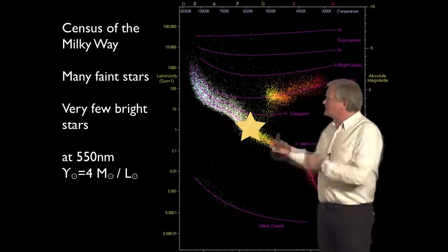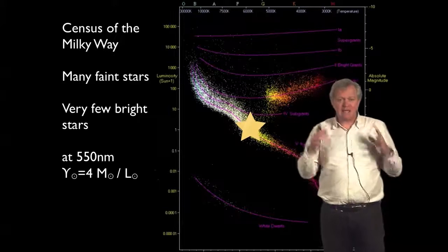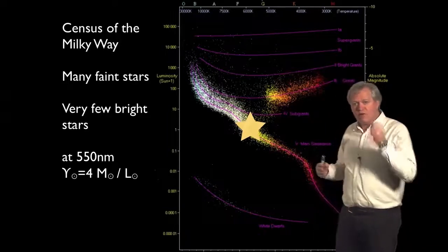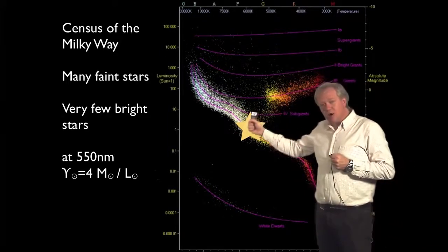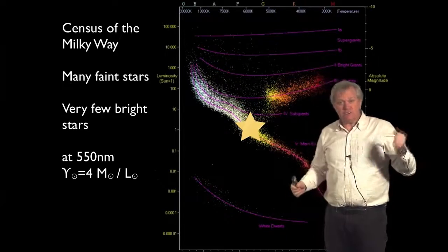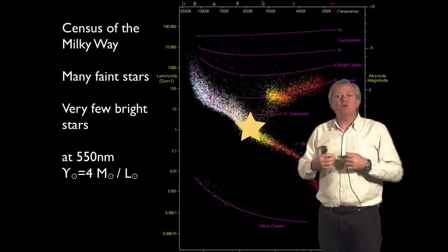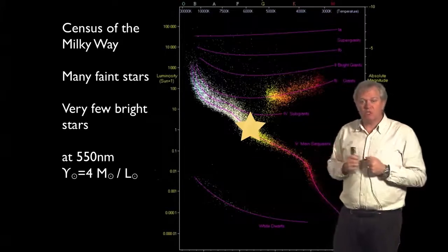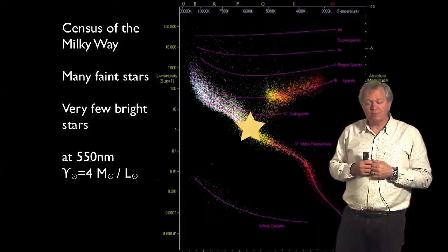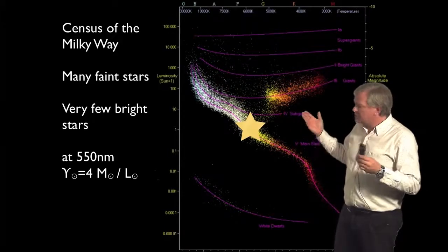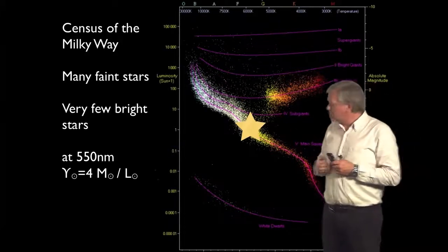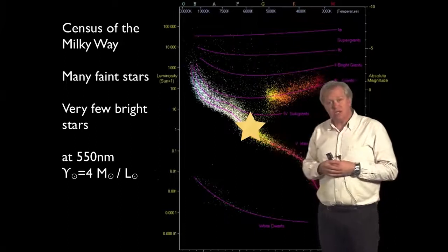So what we need to do is take a census and do a giant accounting exercise where we figure out how bright each star is, how frequent it is, and what its mass is. And we put it together to find out the average mass-to-light ratio for stars in the Milky Way. And when we do this, it turns out we get an answer which indicates that the Sun is pretty typical.